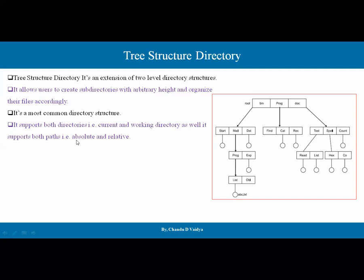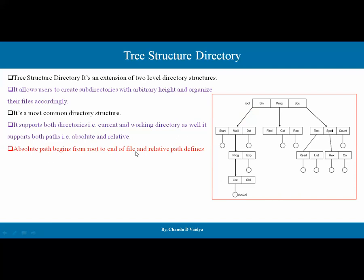Absolute path means the full path. If we say abc.text and we go to the absolute path, we will go through bin, mail, proc, list — this is the absolute path. If we talk about relative path, then we depend on the current directory and working directory. So, absolute path is the full path and relative path is a partial path. The absolute path begins from the root and ends at the file, while the relative path defines a path from the current directory only.